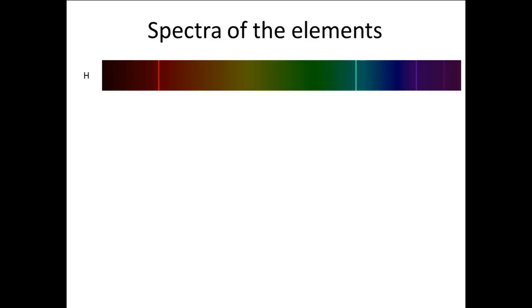Let's take a closer look at the spectrum of hydrogen. In the visible region of the spectrum, there are only four lines: one in the red region, one in the blue-green region, one in the indigo region, and one in the violet region.